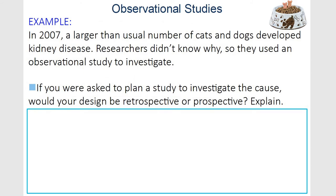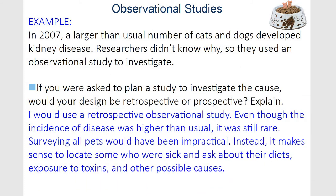Let's do an example. A larger than usual number of cats and dogs developed kidney disease. They didn't know why, so they had to observe it. To find out why these cats and dogs are getting kidney disease, I would probably do a retrospective study — just looking at those that got sick to see what kind of relationship there might be among those dogs and cats.